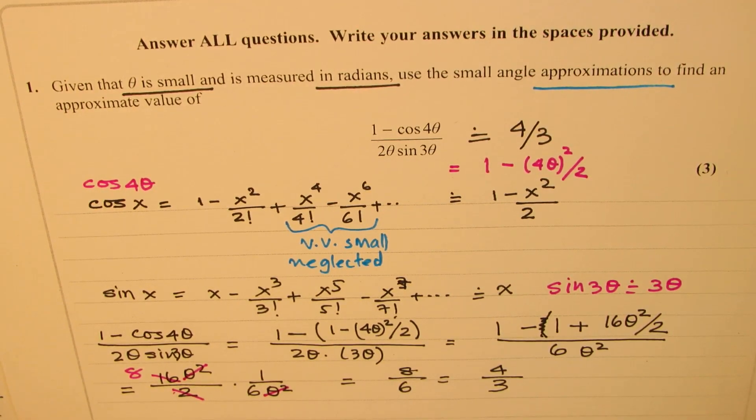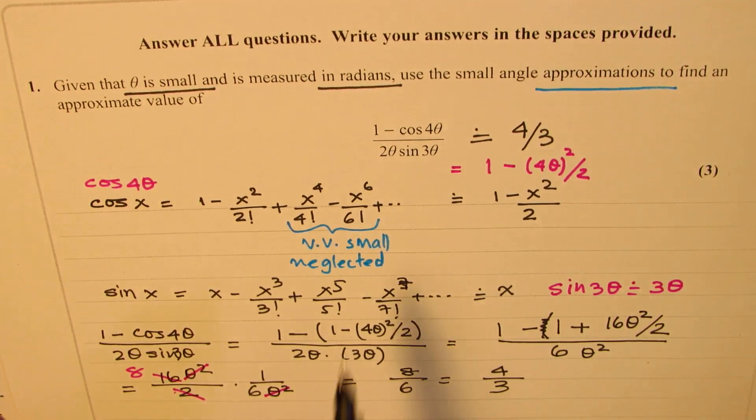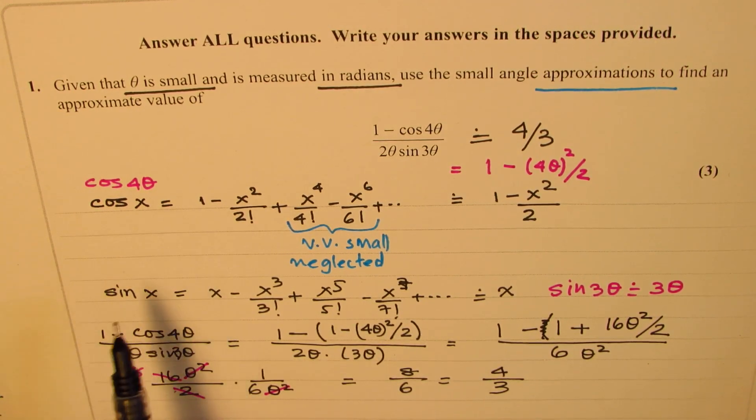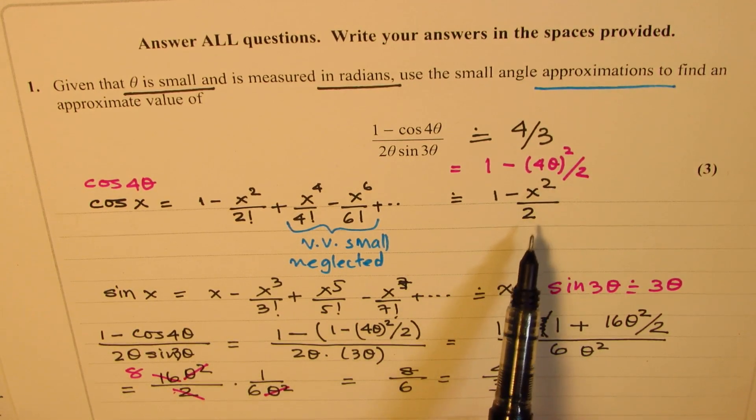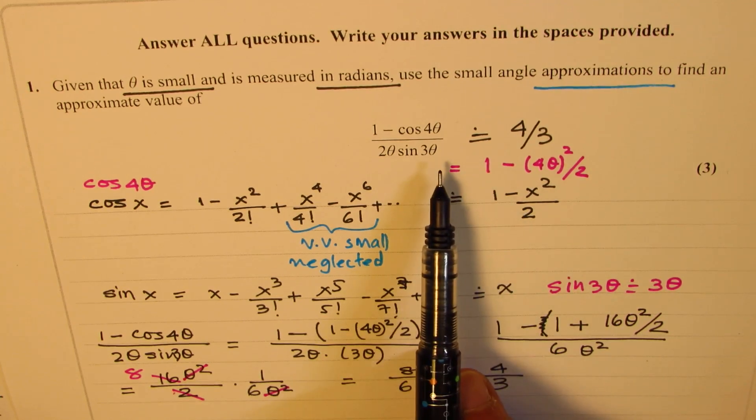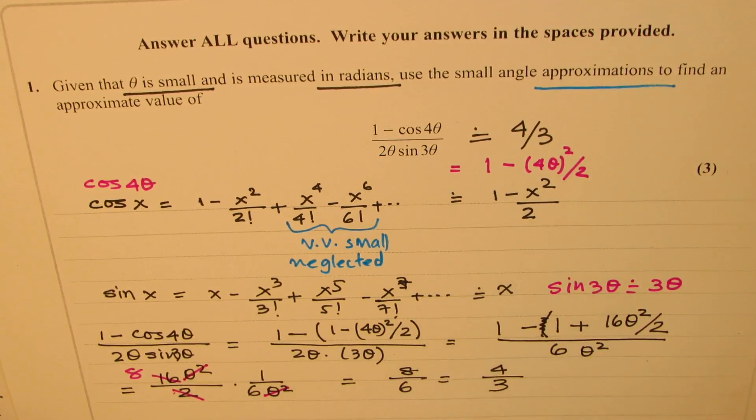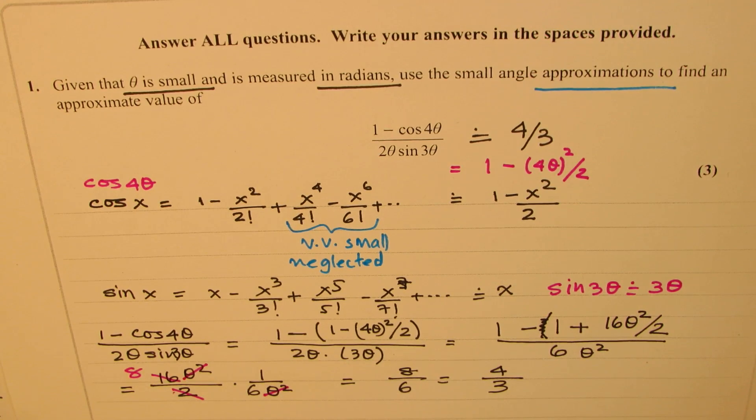So that is how we are going to answer this question. So I hope the steps are absolutely clear. So you should know how to approximate the trigonometric function cosine and sine. Cos x is 1 minus x squared by 2, sine x is x when x in radians is very, very small. And once you substitute those values, after that, it's just a matter of simplification.